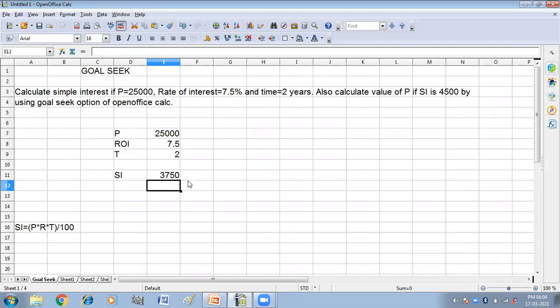So my simple interest is 3750. So what was the question? Calculate simple interest if the principal is 25,000, rate of interest is 7.5%, and time is 2 years.